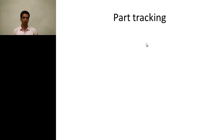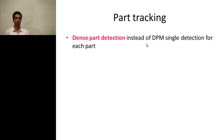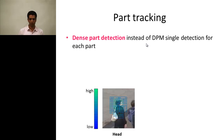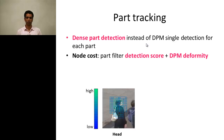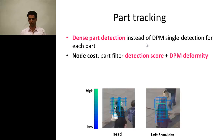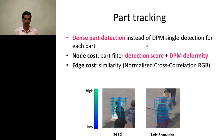After getting the person tracklets, we perform part tracking within each tracklet. For each part of the person we get dense part detections rather than a single detection per part — these come from the DPM person detector. The detections are scored based on the part filter response plus the DPM deformity, so for example when looking for the head we focus on the top of the bounding box. The edge cost in part tracking is the similarity of two parts based on normalized cross-correlation of two patches.